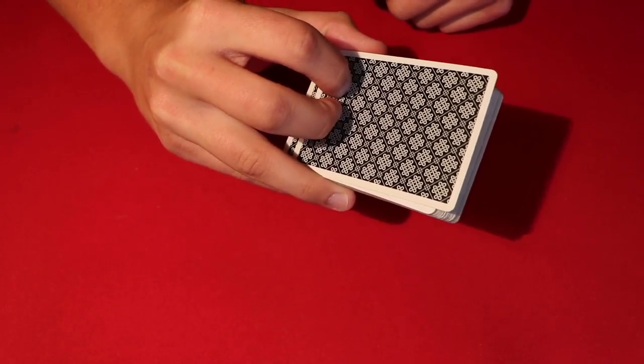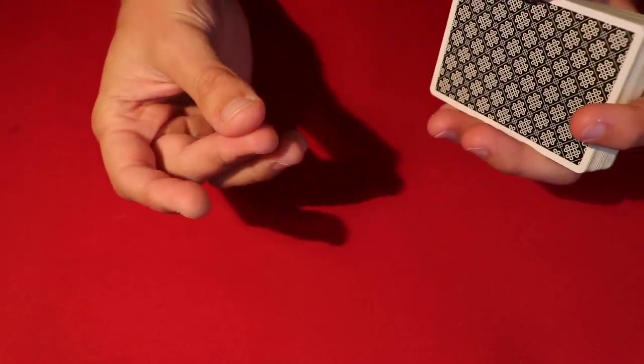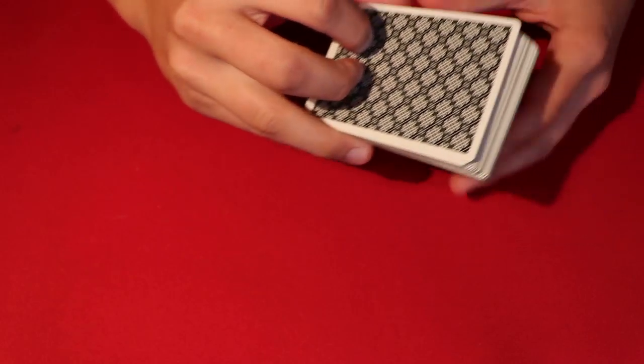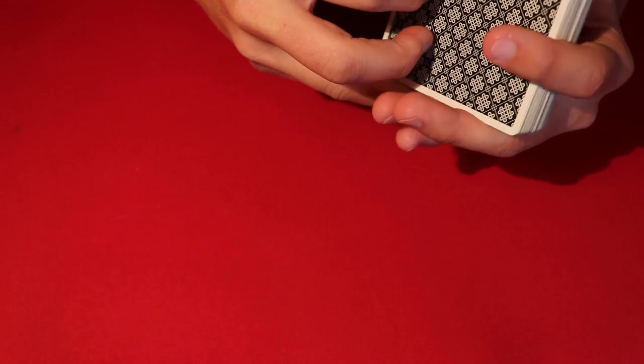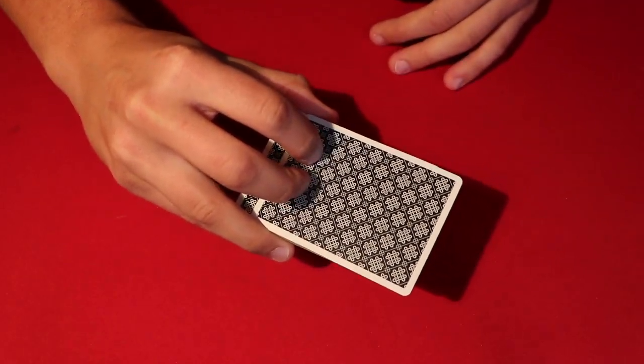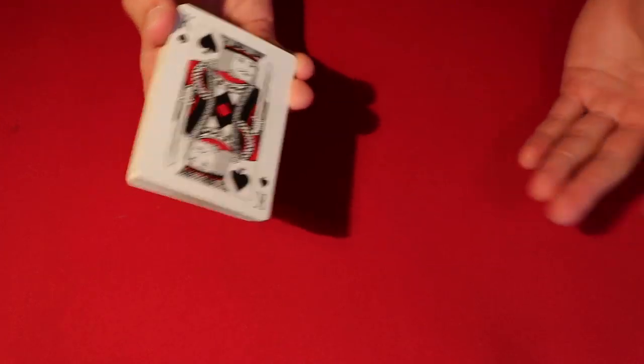It's going to be weird because your middle finger is longer than your index, so the card's going to want to come out like diagonal if you don't automatically change the way you're pushing the card up. But it's pretty simple.